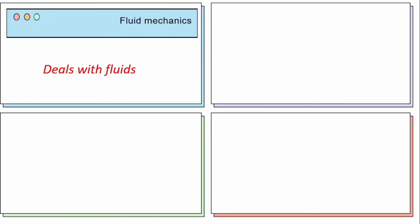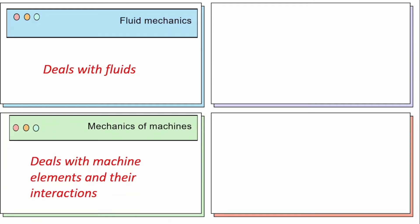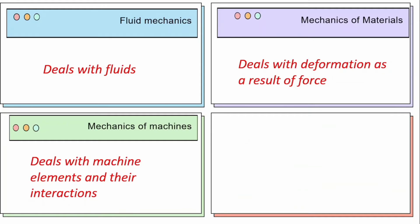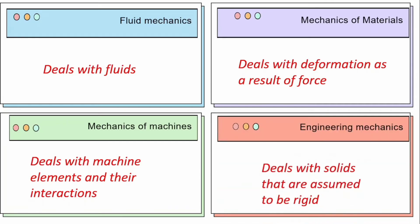There are different areas of science that study the influence of forces on a body. Fluid mechanics tends to predict the behaviour of fluids under the influence of a force. Mechanics of machines deals with machine elements and their interactions. Mechanics of materials deals with deformation as a result of a force — when a body compresses or expands significantly when acted upon by a force. This is also called strength of materials or mechanics of solids. Engineering mechanics deals with solids assumed to be rigid, meaning deformations on the body are assumed negligible.